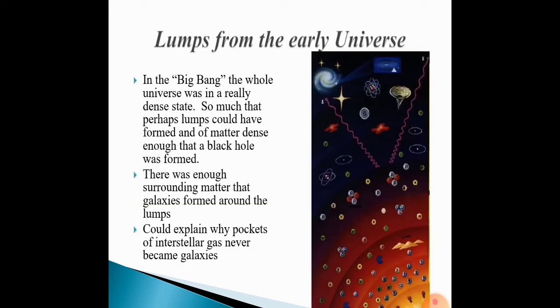Lumps from the early universe. In the Big Bang, the whole universe was in a really dense state, so much that perhaps lumps could have formed of matter dense enough that a black hole was formed. There was enough surrounding matter that galaxies formed around the lumps. Could explain why pockets of interstellar gas never became galaxies.